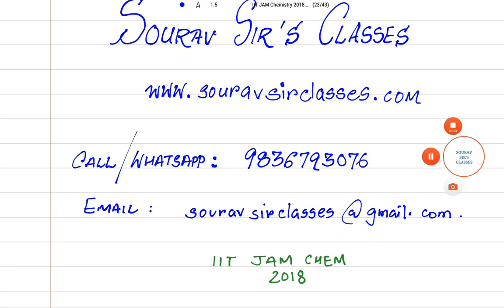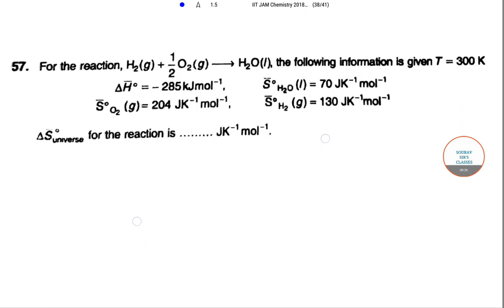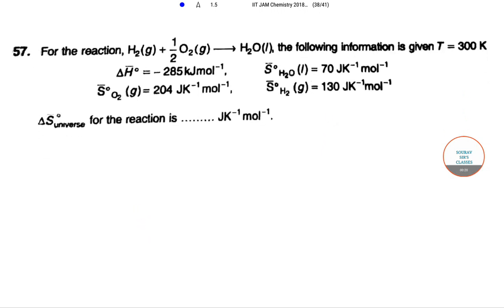Let's move on. We have question number 57. For the reaction H₂(g) plus half O₂(g) gives us H₂O(l), the following information is given: temperature equals 300 Kelvin, ΔH° equals minus 285 kJ per mole, S° for oxygen gas equals 204 joules per Kelvin per mole, S° for H₂O liquid equals 70 joules per Kelvin per mole, S° for H₂ gas equals 130 joules per Kelvin per mole. We need to find the ΔS° universe for the reaction in joules per Kelvin per mole.